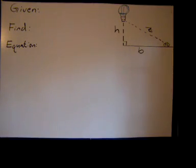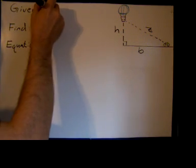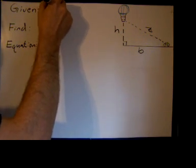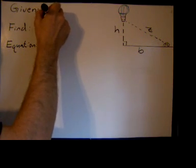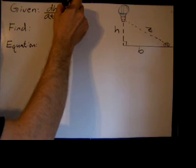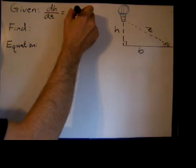Now we can decide what we're given. We were given a couple of rates of change. The balloon is rising at a constant rate of one meter per second, so that tells us that dH/dt equals one meter per second.